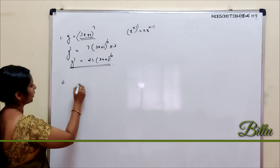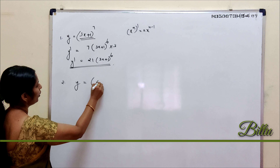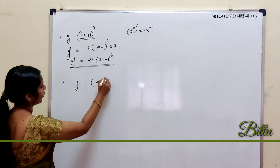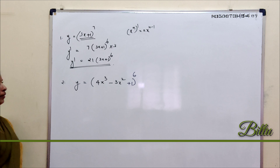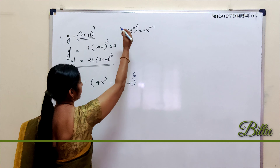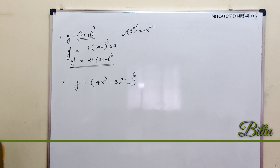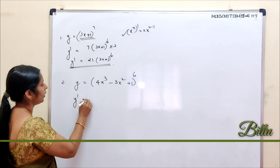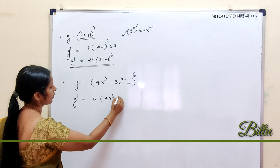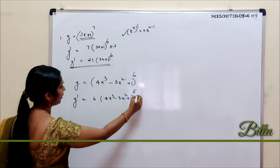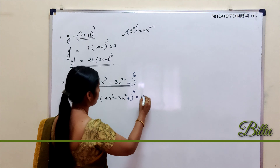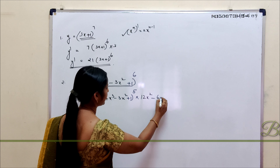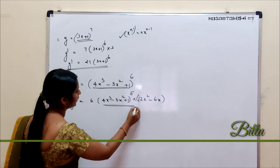Next, consider the function y = (4x³ − 3x² + 1)⁶. Again using the result that the derivative of xⁿ is n·xⁿ⁻¹ with n = 6, we get 6·(4x³ − 3x² + 1)⁵, and then we multiply by the derivative of the inside function 4x³ − 3x² + 1, which is 12x² − 6x. So y' = 6(4x³ − 3x² + 1)⁵ · (12x² − 6x).